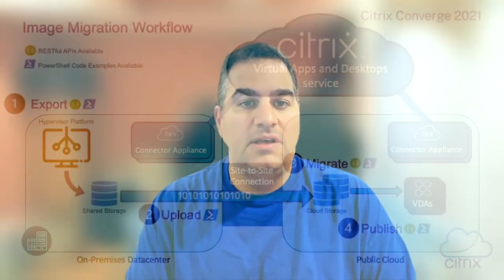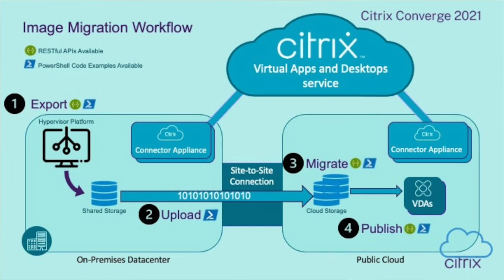Let's take a couple of minutes here to discuss at a high level how the image portability service works. You'll see here on this diagram a typical virtual apps and desktop service deployment where we have an on-premises resource location hosted within a customer's local or on-premise data center, a resource location in the customer's public cloud subscription, and a couple other standard components required for Citrix cloud deployments, such as the connector appliance. We also have a site-to-site connection between the two sites that allows direct connectivity between the two environments.